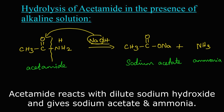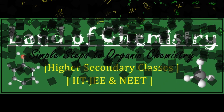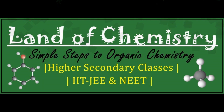The ONa part from sodium hydroxide gets attached to the aceto part and we get sodium acetate. The hydrogen gets attached to the NH2 and we get ammonia as the product. Thank you.